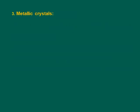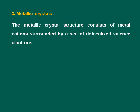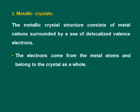The third type is metallic crystals. The metallic crystal structure consists of metal cations surrounded by a sea of delocalized valence electrons. In metals, the valence electrons are free to move throughout the crystal; they are not bound to a certain atom. These delocalized electrons — meaning they are not in fixed positions — come from the metal atoms and belong to the crystal as a whole, not to any individual atom.